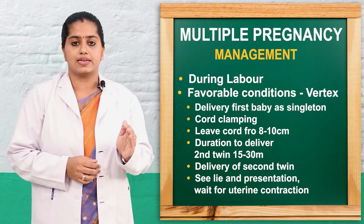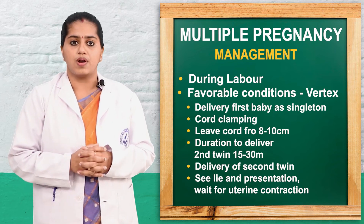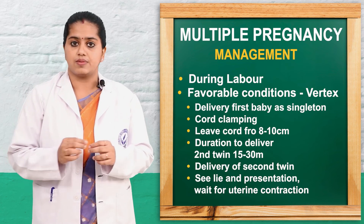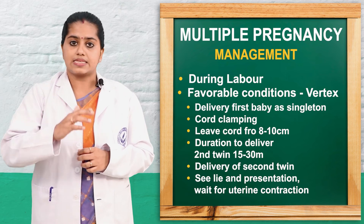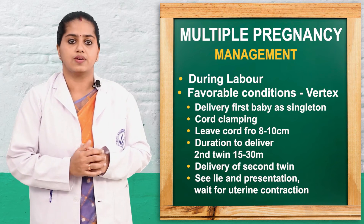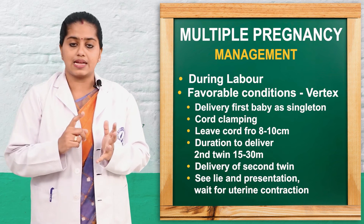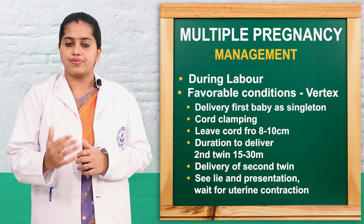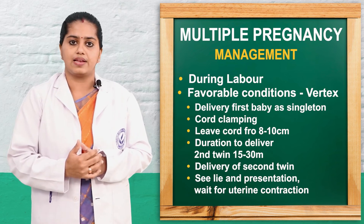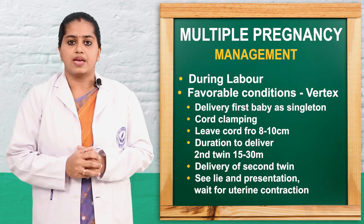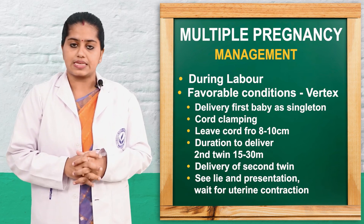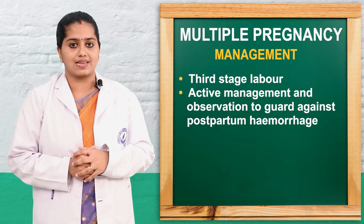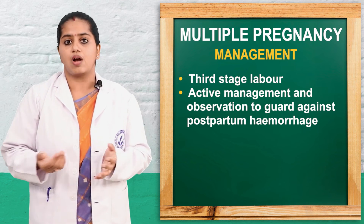In the intranatal period, delivery should be conducted as a normal vaginal delivery if there are no problems. The first vertex baby is delivered first, then the cord is ligated and clamped, leaving 8 to 10 cm of cord. We should not give methergine or oxytocin yet. The second baby can be delivered after 15 to 30 minutes. When the second twin is to be delivered, we assess the lie. If second vertex, deliver normally or use forceps application. If breech, do breech extraction. If transverse, perform external cephalic or internal podalic version and deliver the baby. After delivery of the second twin, label the babies, then give methergine and oxytocin. Active management of the third stage labor with oxytocin and prostaglandin, proper neonatal care, NICU, and placental observation are done, and the mother is monitored for postpartum hemorrhage.